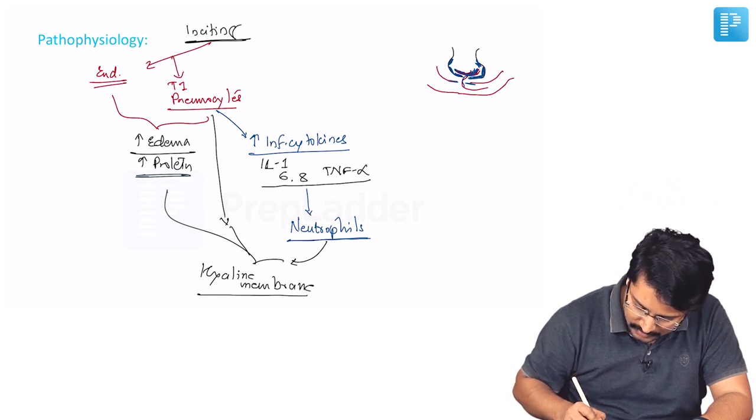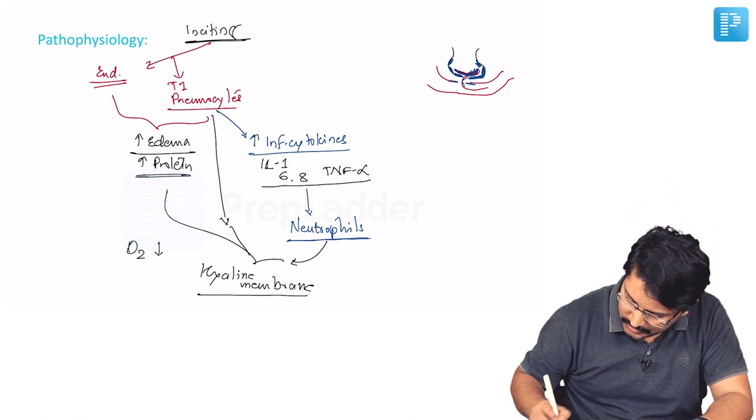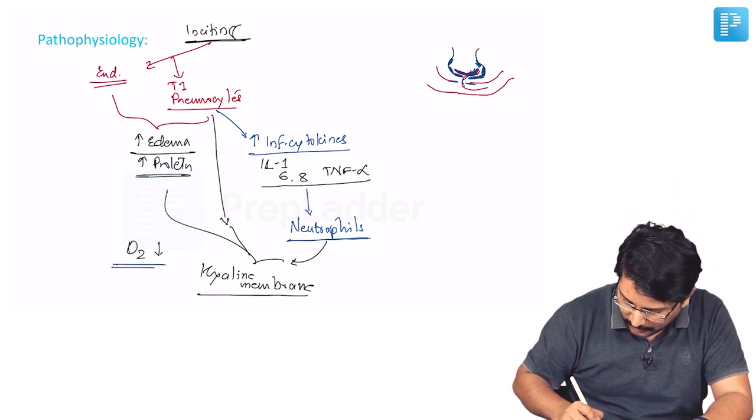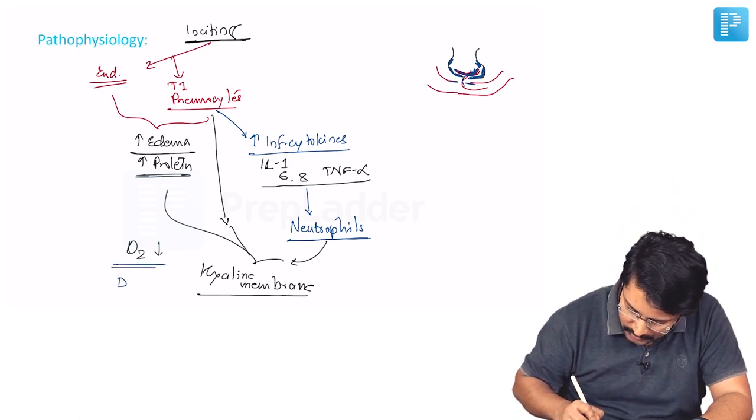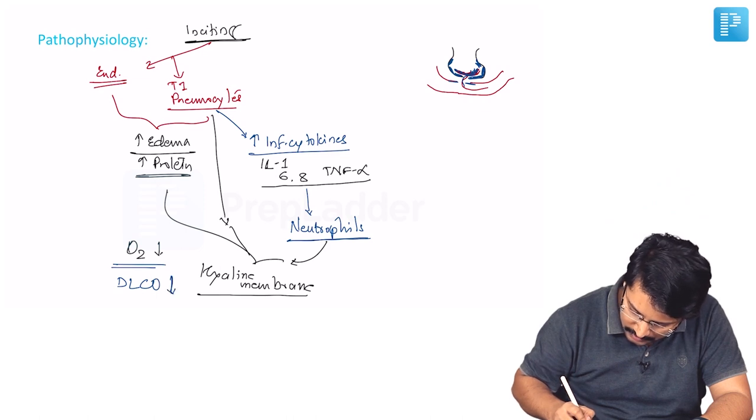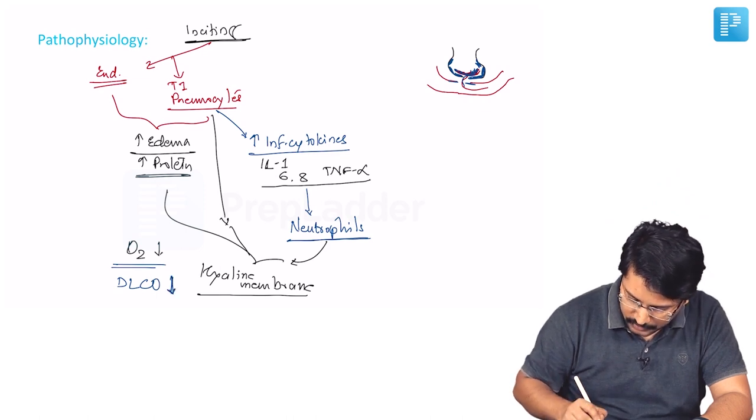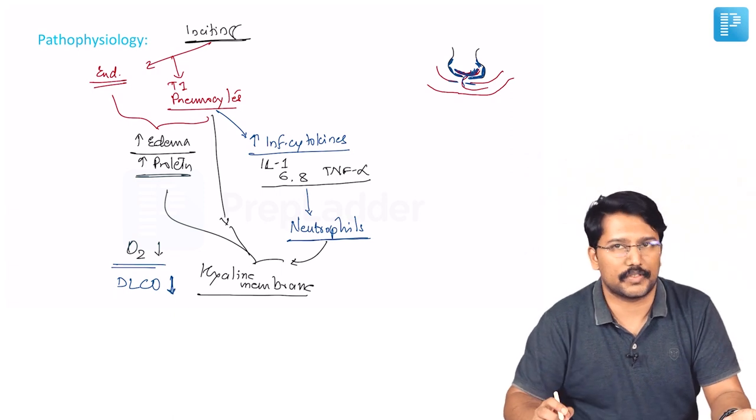When there is hyaline membrane formation, what is happening to gas exchange? Obviously oxygen transport across the membrane is decreased. So there is decreased oxygenation which you can also do objective evaluation by doing DLCO. So DLCO will also be reduced. The net result is hypoxia.